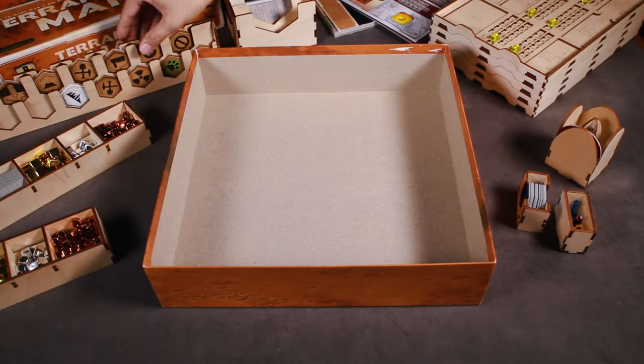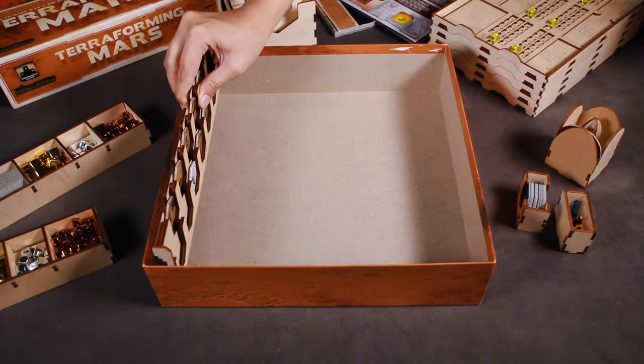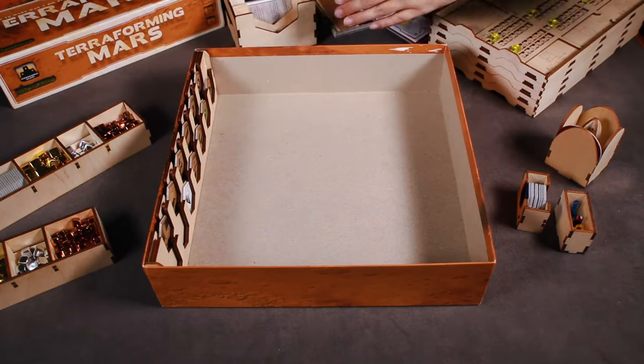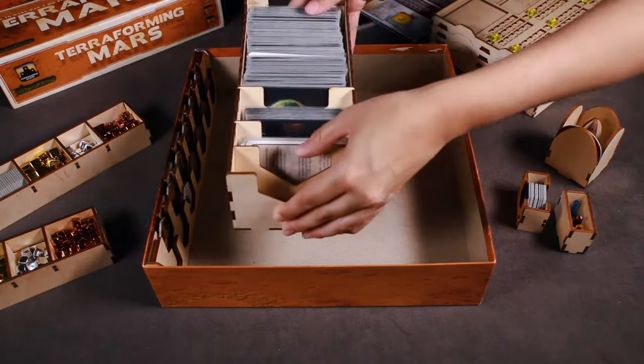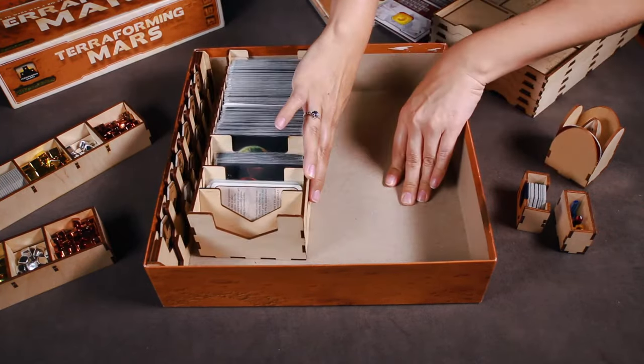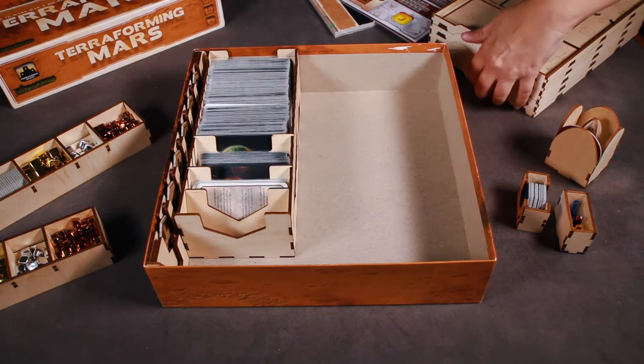Let's put this all together. The hex tile tray is placed along the side here, and the card shoe is placed next. Then, the five player trays.